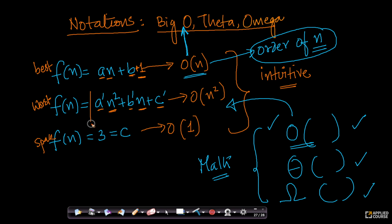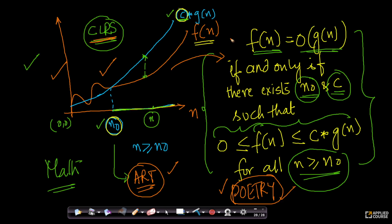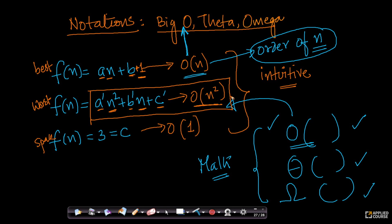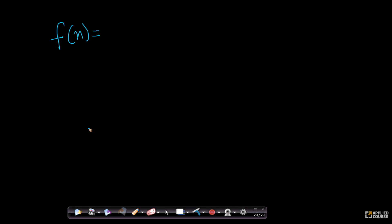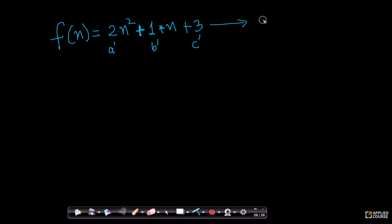Let us go back to the original question. We said that if my time complexity is a-dash n square plus b-dash n plus c-dash, it is order of n square intuitively. Now, given this rigorous definition, can I construct a proof? Let us take an example. Let my f of n be 2n squared plus 1 times n plus 3, where 2 is a-dash, 1 is b-dash, and 3 is c-dash. We have to prove this is order of n square.